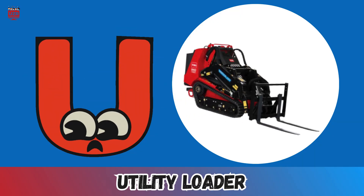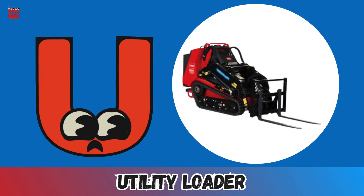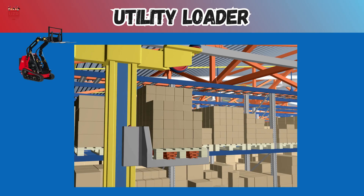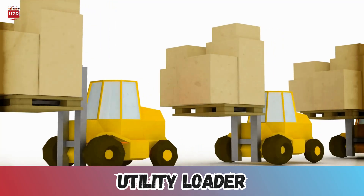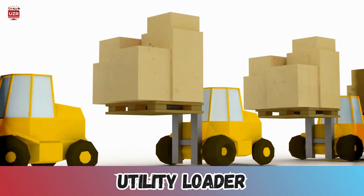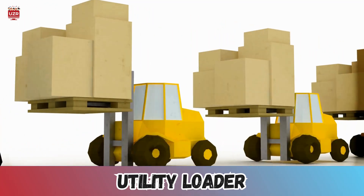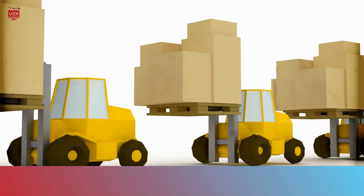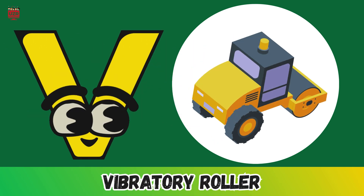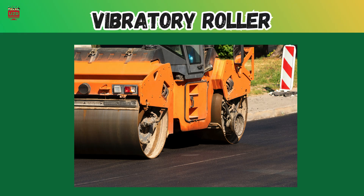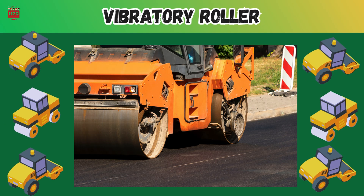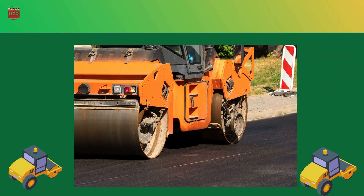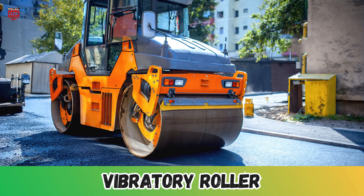U is for utility loader. Utility loader — it's versatile and handles all kinds of tasks. V is for vibratory roller. Vibratory roller — it can compact soil to make it strong.